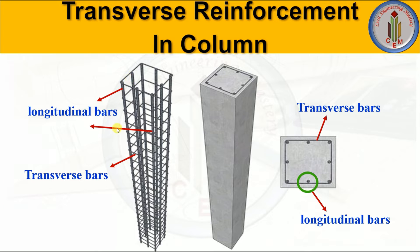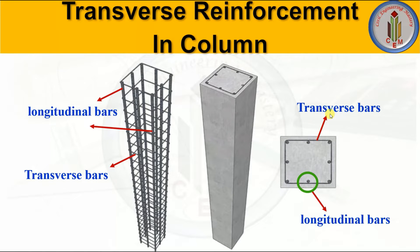The vertical bars are called longitudinal bars, and the closed ties are called transverse bars. If you look at the plan, the main bars are the longitudinal bars, and the bar connecting all the longitudinal bars is called the transverse bar. We can also call it a lateral tie.